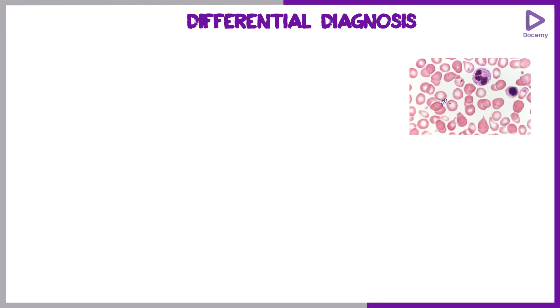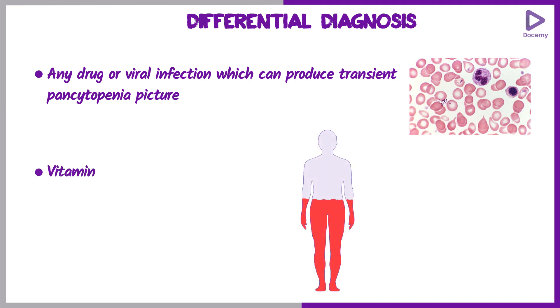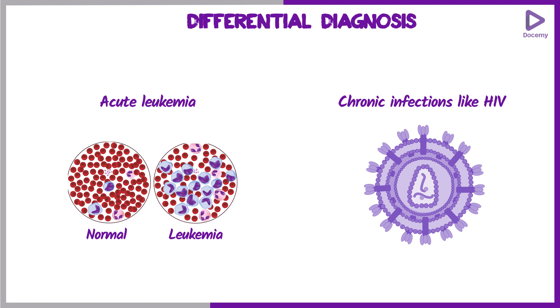For the differential diagnosis of myelodysplastic syndrome, it most commonly presents as a pancytopenia picture. Any drug or viral infection that can produce a transient pancytopenia is a differential diagnosis. Other causes include vitamin B12 deficiency, folic acid deficiency, early presentation of acute leukemia, and chronic infections like HIV, which can also present like MDS.